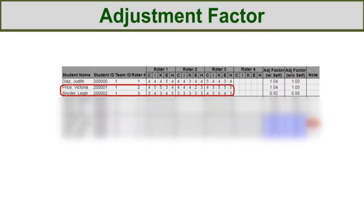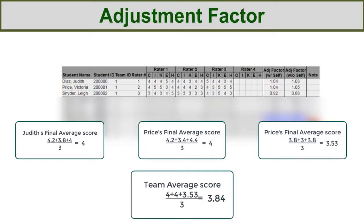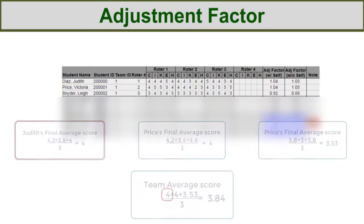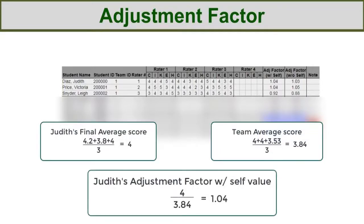Now, we repeat this process for the other two students to find their final average scores. Next, we can use each student's final average including Judy's to find the team average score. Finally, we divide Judy's final average by the team's average to calculate her adjustment factor with her self-rating factored in.